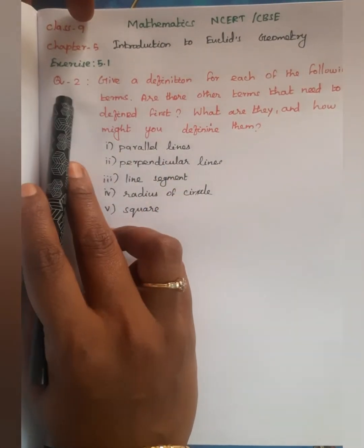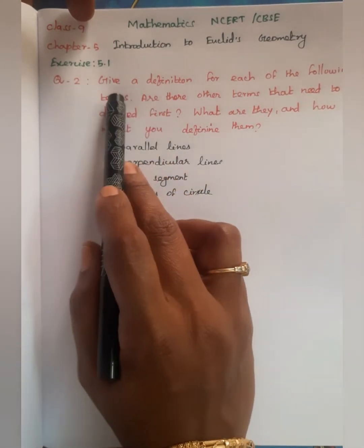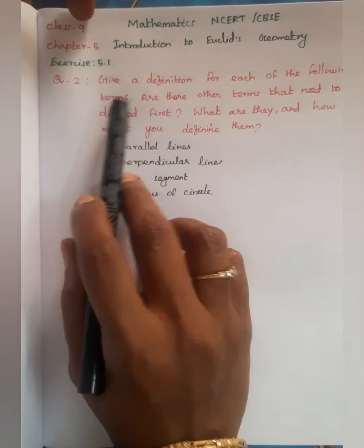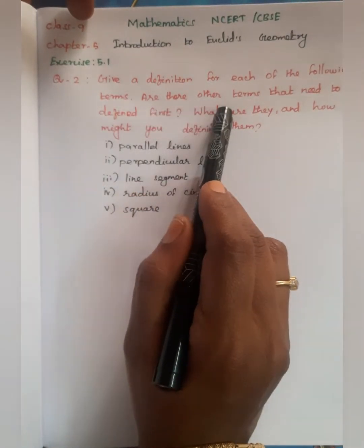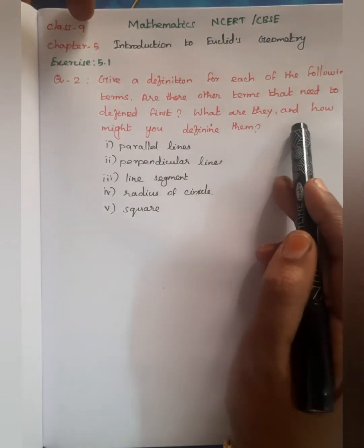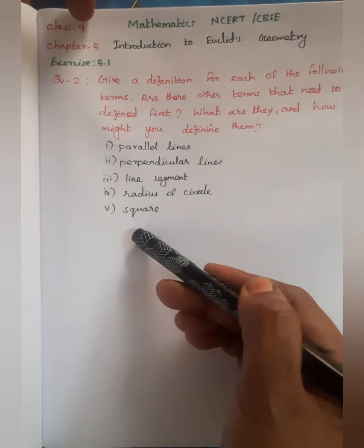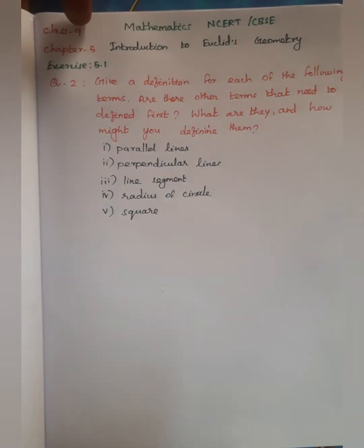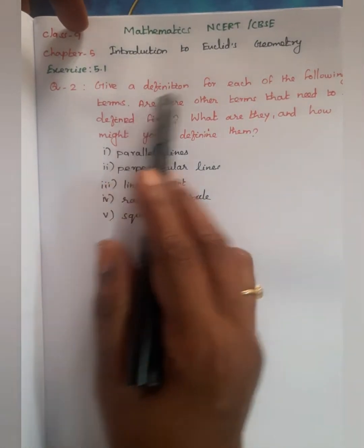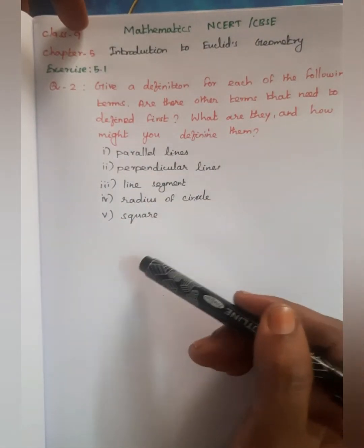Exercise 5.1, question number 1 and question number 2 are given. Give a definition for each of the following terms. Are there other terms that need to be defined first? And how might you define them?